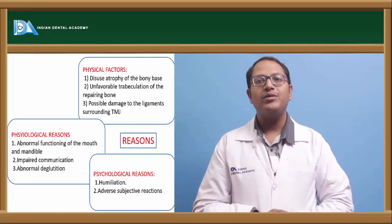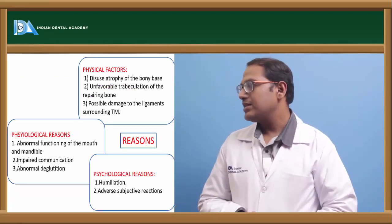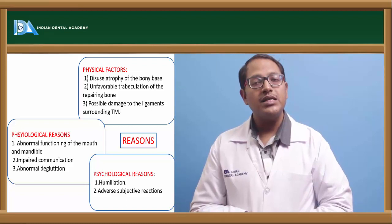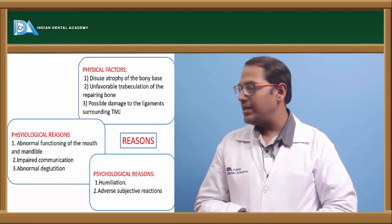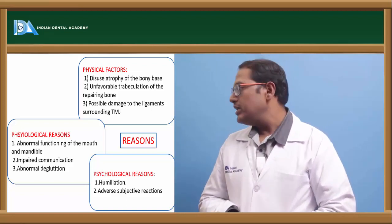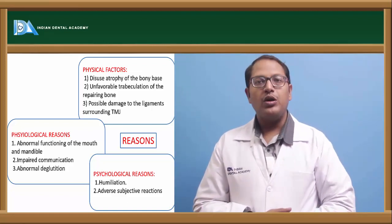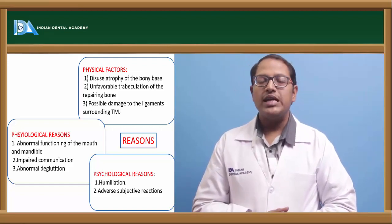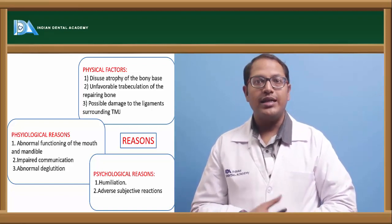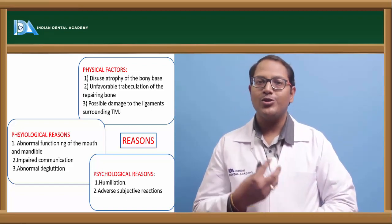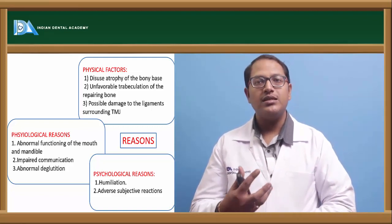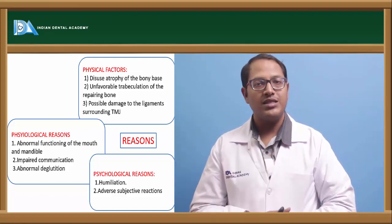Coming to the reasons to go ahead with immediate dentures — these can be physical, psychological, and physiological reasons. Physical reasons include damage to the ligaments around the temporomandibular joint, unfavorable tuberculation of the repairing bone, or disuse atrophy of the bone. Psychological effects arise because the patient feels humiliated that there are no teeth after extraction, and also adverse subjective reactions from others, which is why patients request teeth even after extraction.